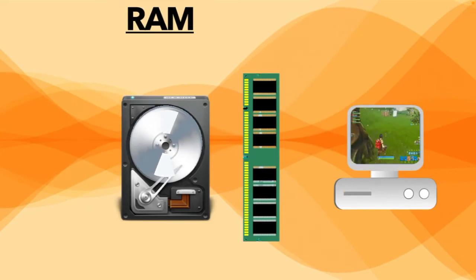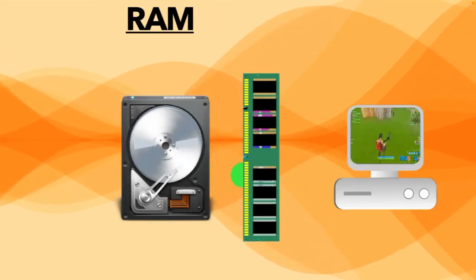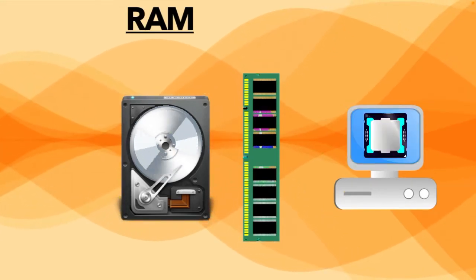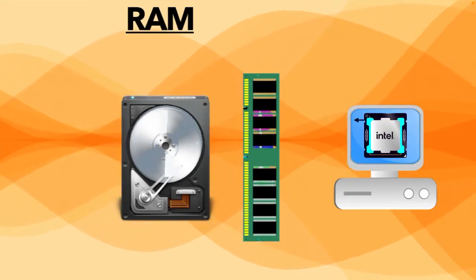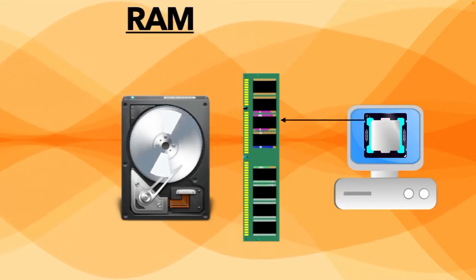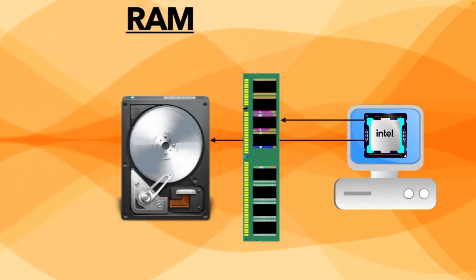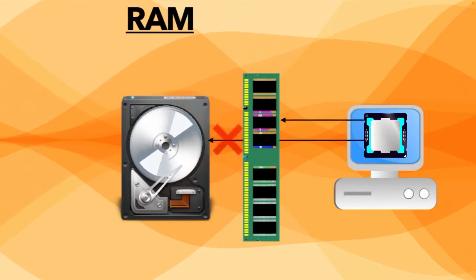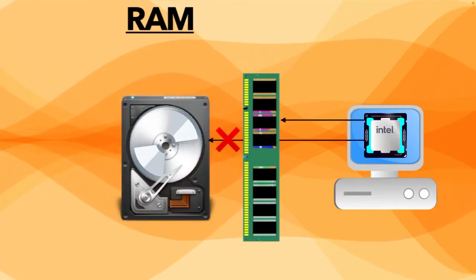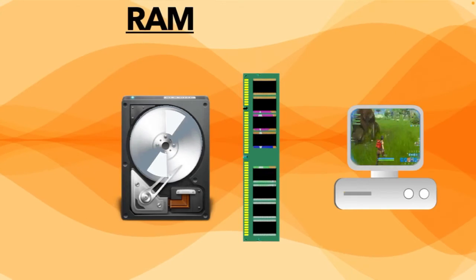The processor can get to that data quickly. That's why RAM prevents the processor from digging through the slower storage device like the hard drive. Once you are done playing your game and close it down, the processor doesn't need that data anymore.